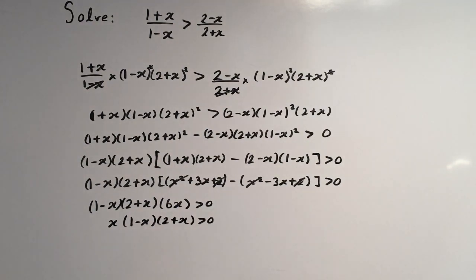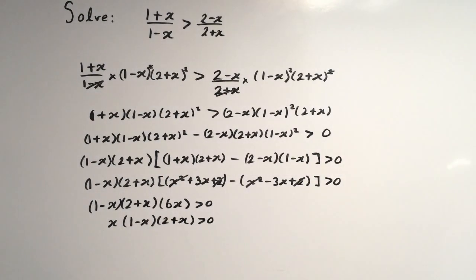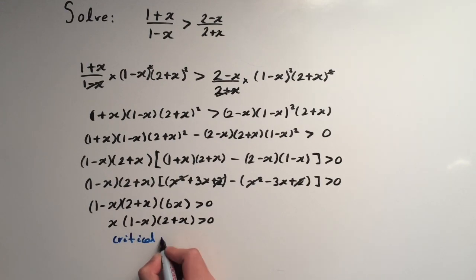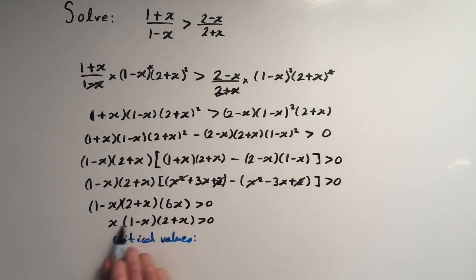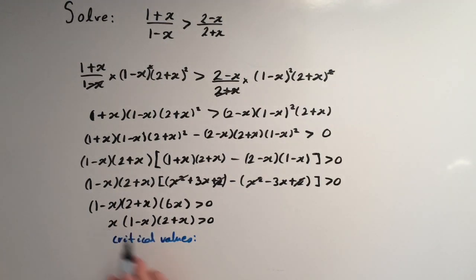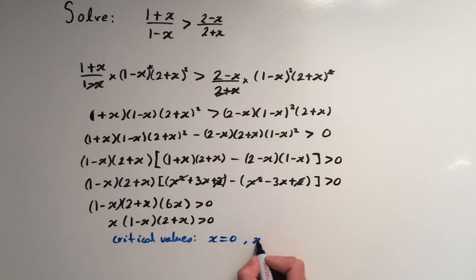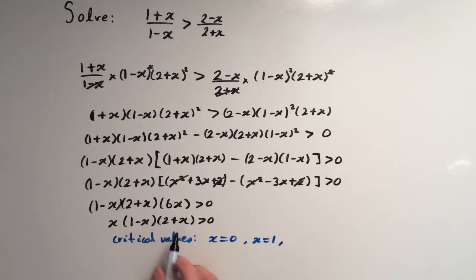This is a cubic, and we can sketch it to find where it is greater than the x-axis. First, find the critical values — where the expression equals zero. That's when x = 0, when x = 1 (from the bracket 1-x = 0), and when x = -2 (from 2+x = 0).